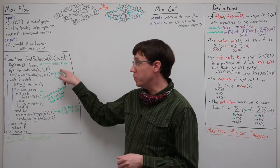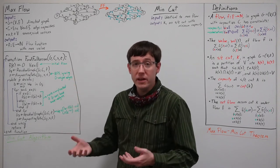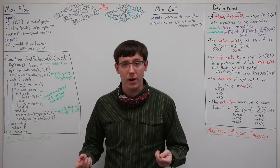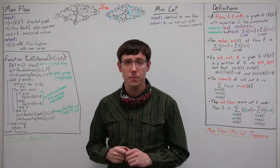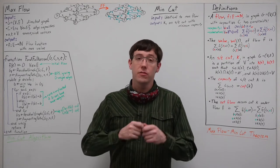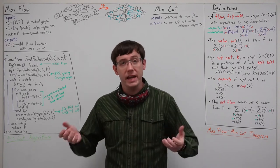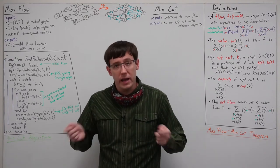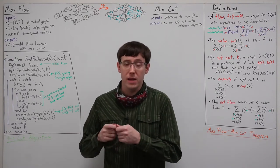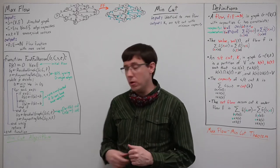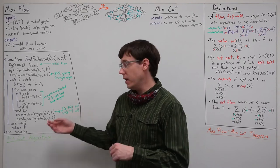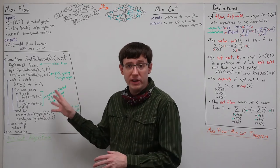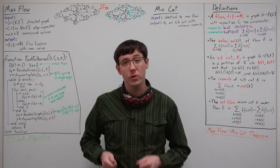Our algorithm works by building a residual graph and then repeatedly finding augmenting paths — paths from the source to the sink in the residual graph that use only positive weight edges — and each time we push flow equal to the minimum weight of any edge in the path. When we push flow, that increases the flow on any forward edges we use and decreases the flow on any back edges. As we update the flow, we also update the residual graph, then find a new augmenting path and repeat. We discussed this algorithm in much greater detail last time, so I encourage you to look back at that video if you need a refresher.